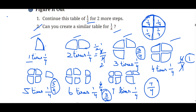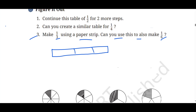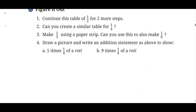The third sum: make 1/3 using a paper strip. Can you use this to also make 1/6? For the paper strip divided into 1/3, we split it into 3 units: 1, 2, 3 — so this portion is 1/3. For the paper strip of 1/6, we further split to get 6 portions: 1, 2, 3, 4, 5, 6. So this portion is 1/6.